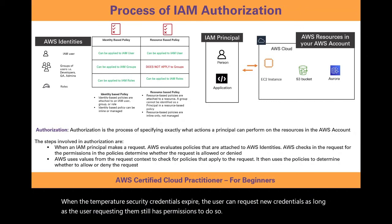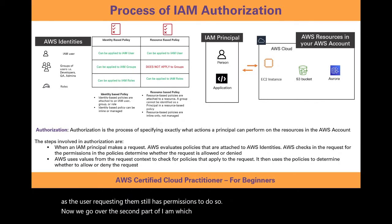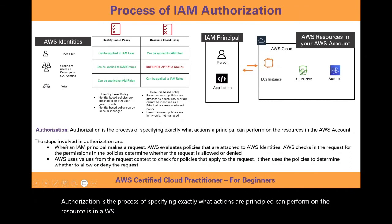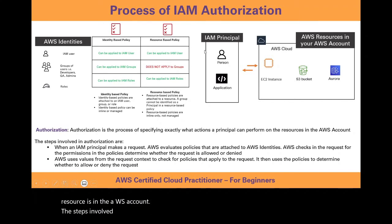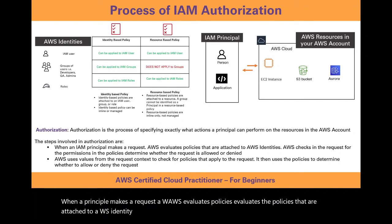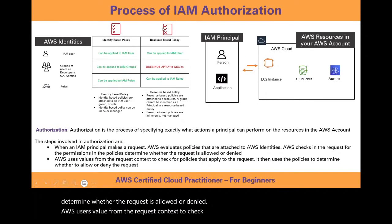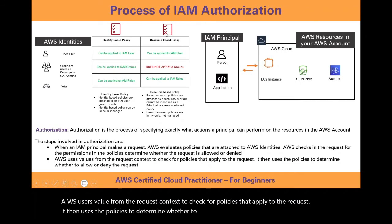Now we go over the second part of IAM, which is authorization. What is authorization? Authorization is the process of specifying exactly what actions a principal can perform on the resources in the AWS account. When a principal makes a request, AWS evaluates the policies that are attached to AWS identities. AWS checks the request for the permissions in the policies to determine whether the request is allowed or denied. AWS uses values from the request context to check for policies that apply to the request, and then uses the policies to determine whether to allow or deny the request.